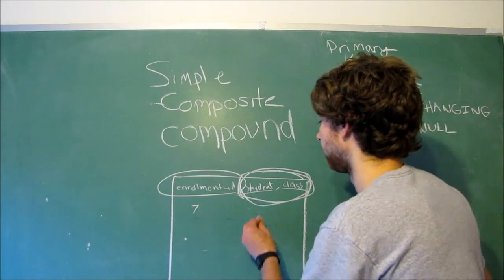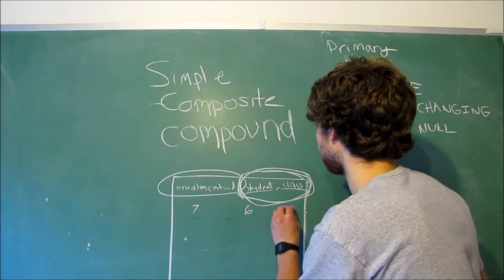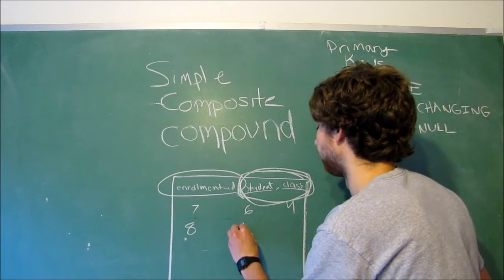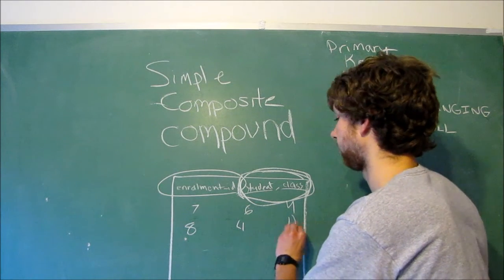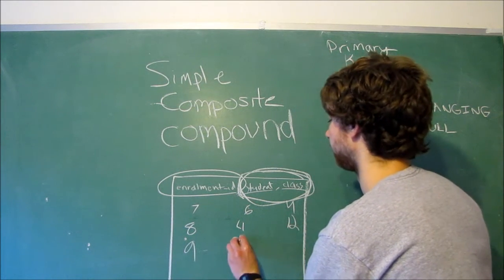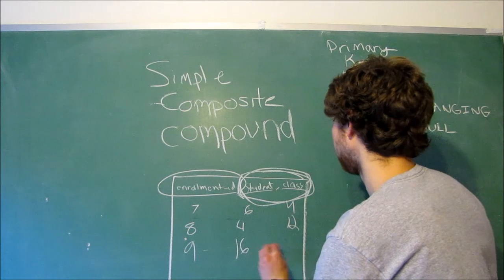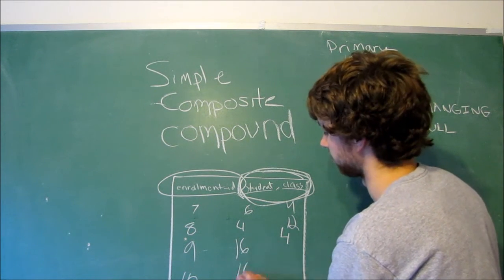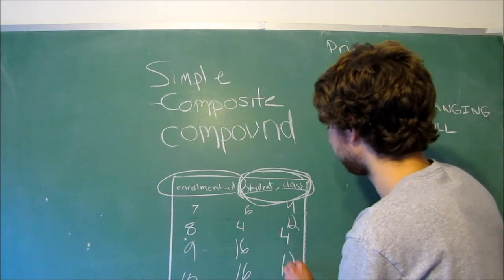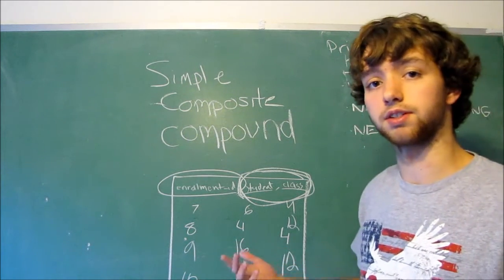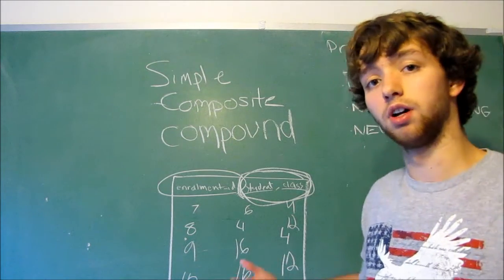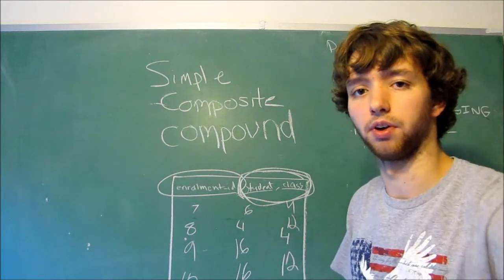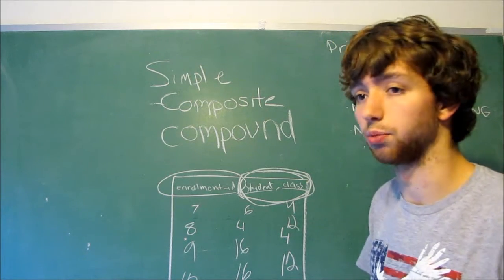So you could have like 7, and then you could have student 6 in the class 4, and then you could have 8 with the student 4 in class 12, and then you could have 9 with the student 16 in class 4, and then we could have 10 with student 16 in class 12, and so forth. That's just an example of what some people do. I'm leaving that up to you, and we'll just see what I do up in this other series, up in the future parts of this series.